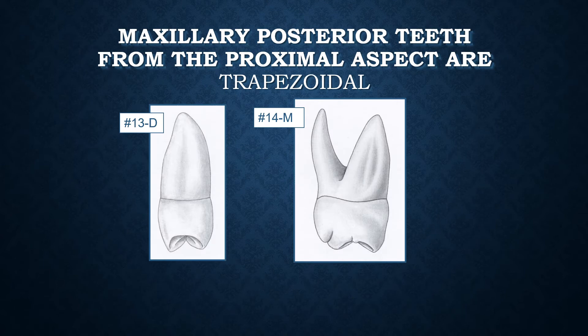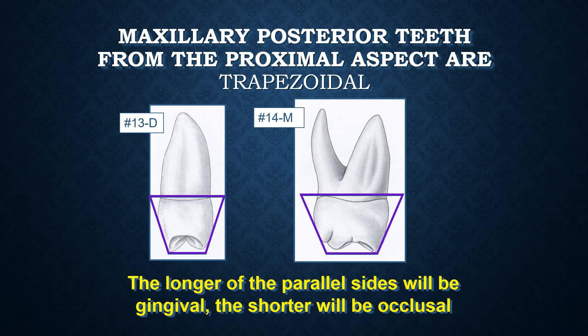Maxillary posterior teeth from the proximal aspect are also trapezoidal. Both structures resemble a trapezoid, but the difference from the facial and lingual surfaces is that the longer of the parallel sides will be gingival, while the shorter side is on the occlusal aspect.